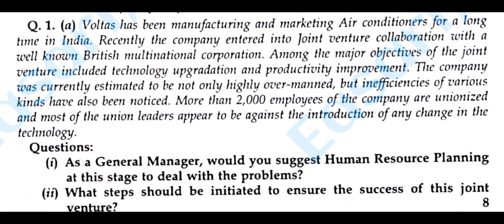Votas has been manufacturing and marketing air conditioners for a long time in India. Recently, the company entered into a joint venture collaboration with a well-known British multinational corporation. Among the major objectives of the joint venture were technology upgradation and productivity improvement. The company was estimated to be highly overmanned and inefficiencies of various kinds had also been noticed. More than 2000 employees of the company are unionized.